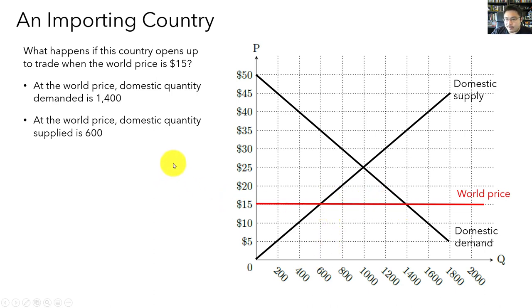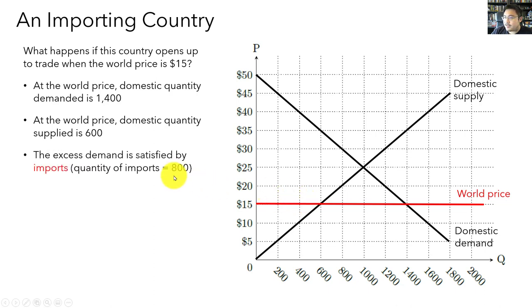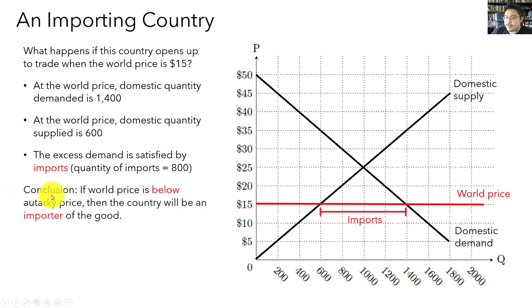Does that mean the market is out of equilibrium and prices are going to be bid up? The answer is no, because buyers and sellers are exposed to international markets. Buyers can't meet their entire demand of 1,400 from domestic suppliers, but they can meet the demand by buying from international sellers. The excess demand is satisfied by imports. The amount of imports is simply the difference between domestic demand and domestic supply, which is 800. So if the world price is below the autarky price, domestic demand exceeds domestic supply, and the country is going to be an importer of the good.